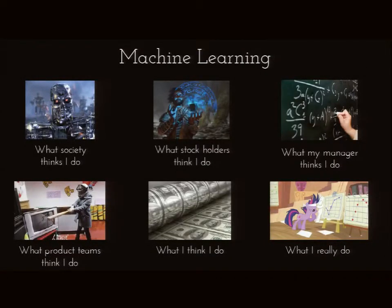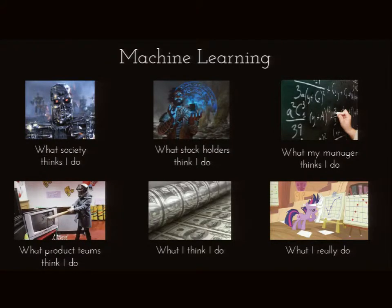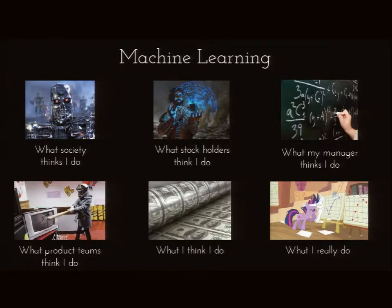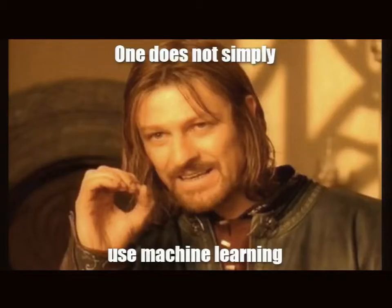If you ask me what I do — when I tell people I apply machine learning in Google Maps — society thinks I'm building robots, my stockholders at Google think we're doing black magic, my manager thinks I'm doing a lot of maths, and my product team feels I'm breaking their system every time I deploy a new model. What I really end up doing is a lot of analysis. Applying machine learning in practice is not just about doing math or getting the algorithms correct — it's about looking into the data, labeling it, and iterating.